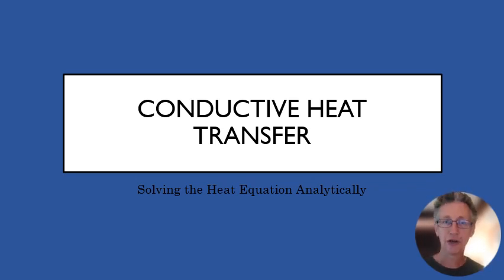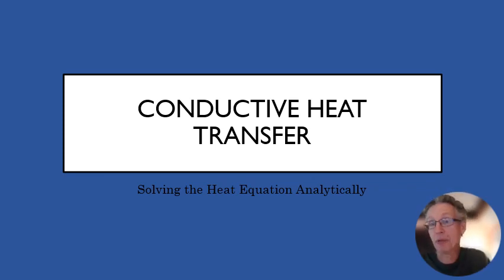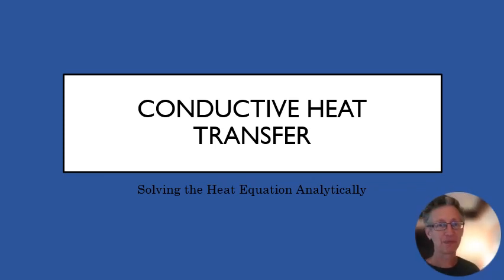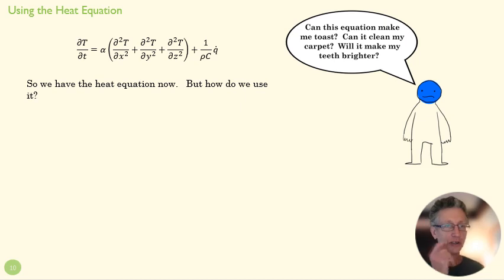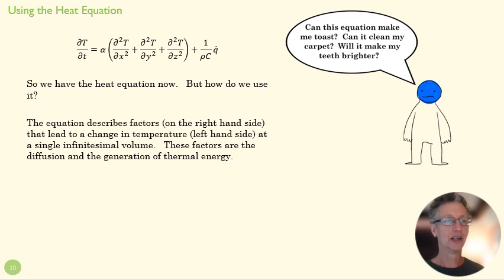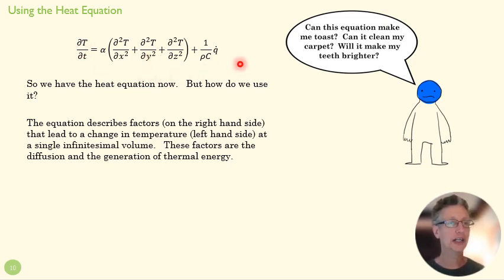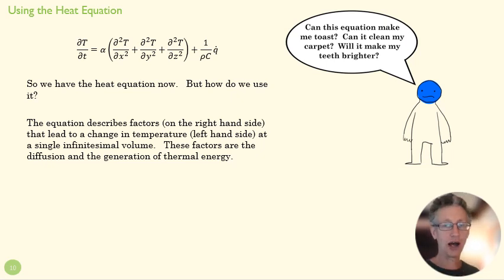So now we've got the heat equation, and we want to be able to solve a problem with it. We want to be able to figure out what's going to happen to a temperature field. So we're going to do that analytically, that is with math. Here's our equation — the equation describes for us the factors that lead to a temperature change at a single point. So this describes what's happening at a single point.